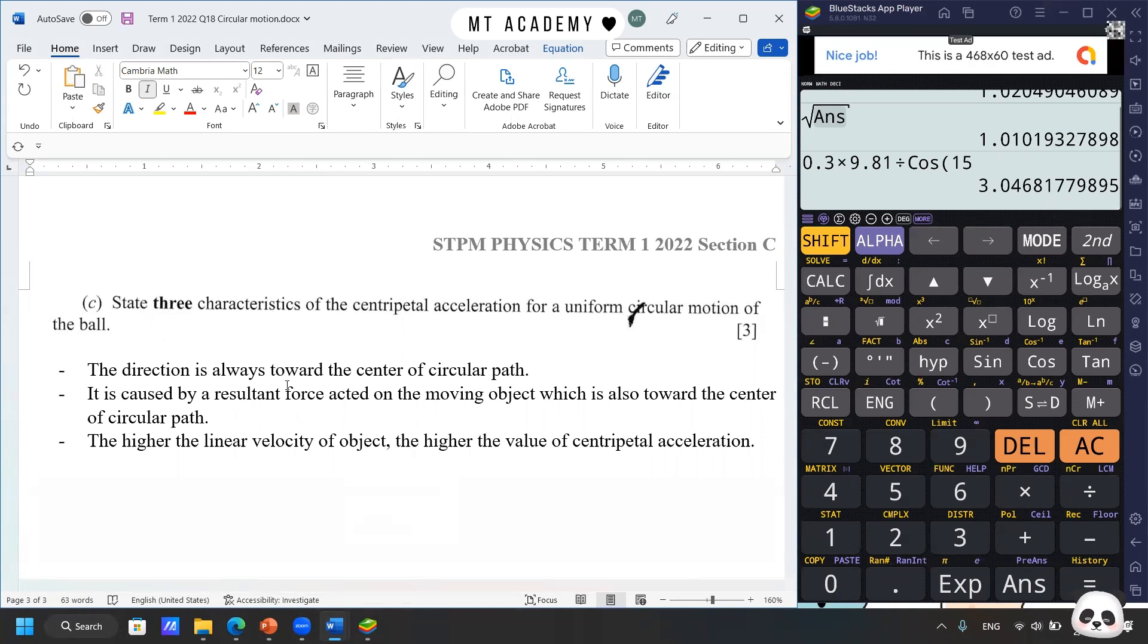And then you also can mention about the change in velocity, which we use it to find out the direction of the acceleration. And then we also can probably mention about the relationship, such as the higher the linear velocity, the higher the value or the faster the centripetal acceleration.